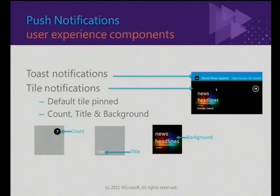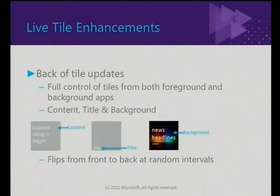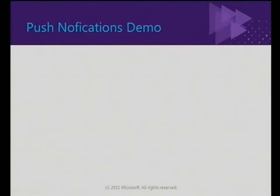This is the default experience a user sees for push notifications. As a developer you have access to the background of the tile on the home screen, the count, and the title — the title also has to represent the name of the application before the marketplace will approve you. You also get a toast notification at the top, with a little image and text. In Mango, you now get access to the back of the tile as well — we'll flip the tile for you at random intervals, and on the back you can paint content, full color images, whatever you want. Jake's going to take you through a nice push notification demo now.